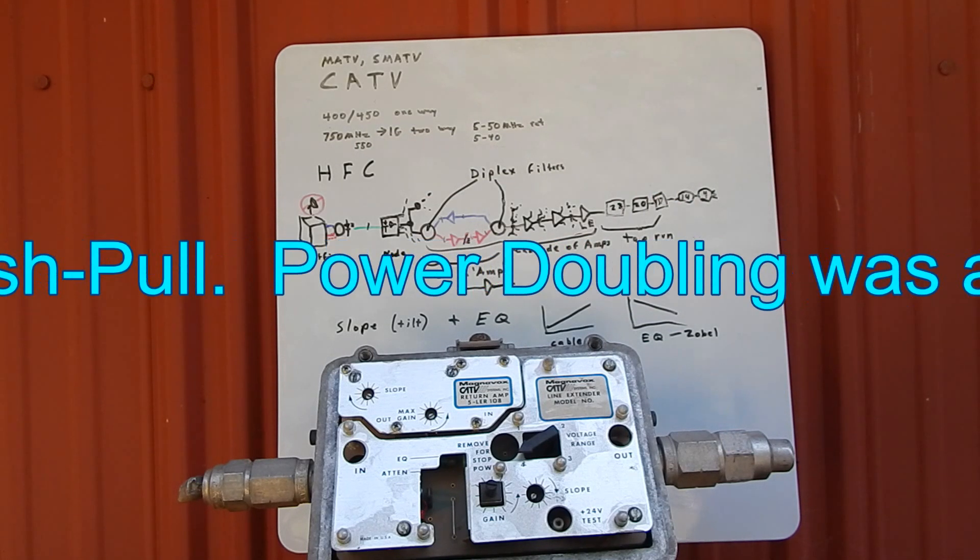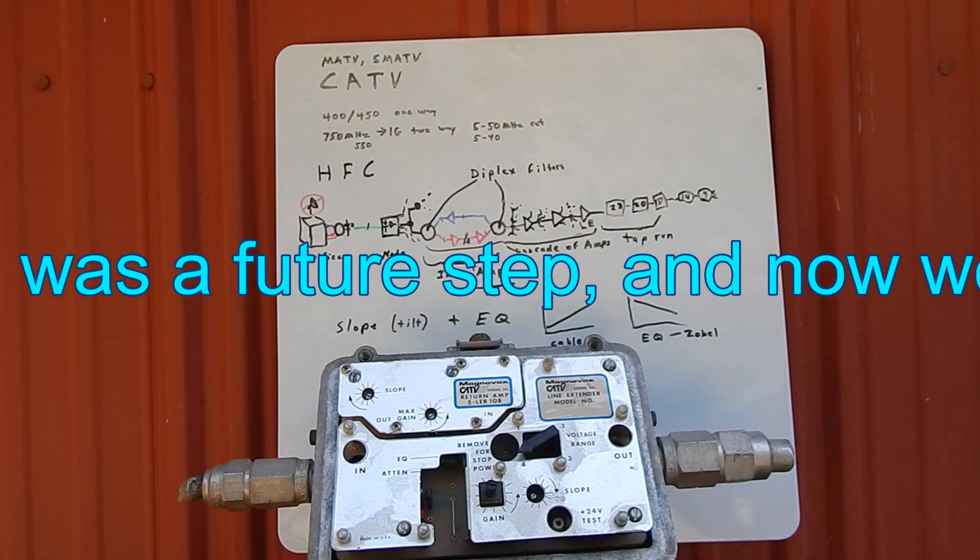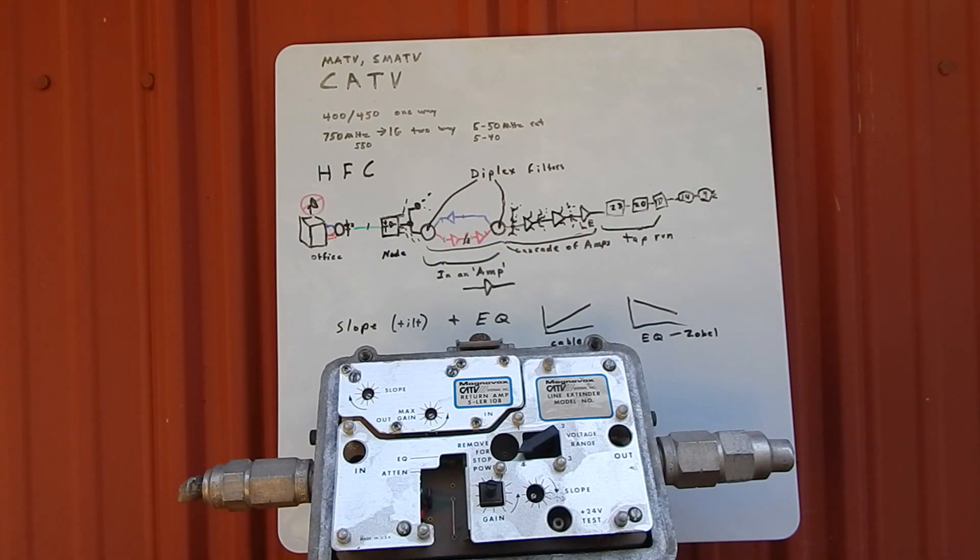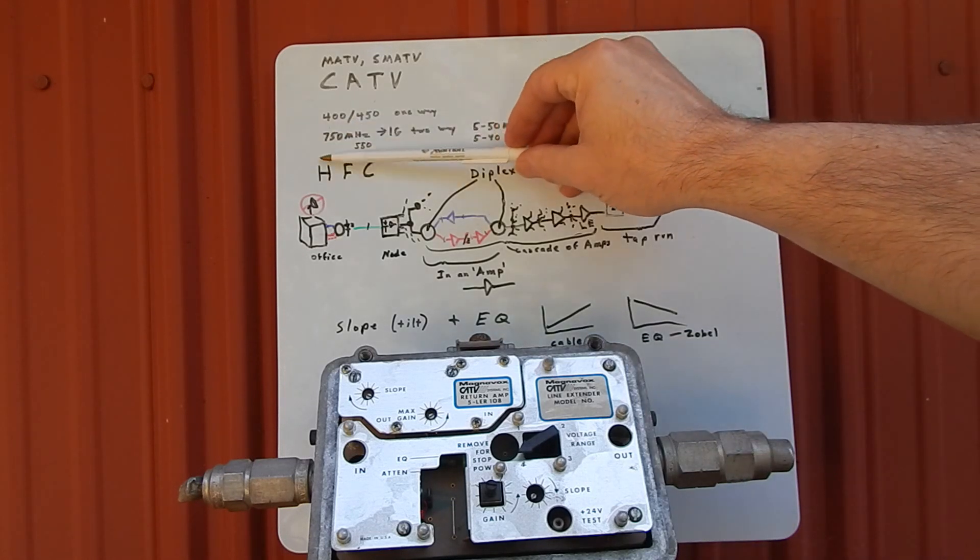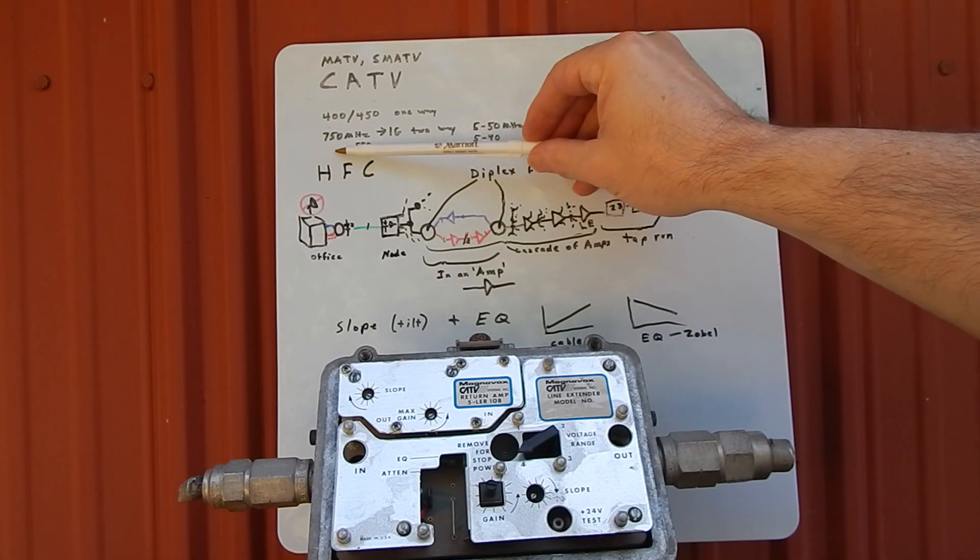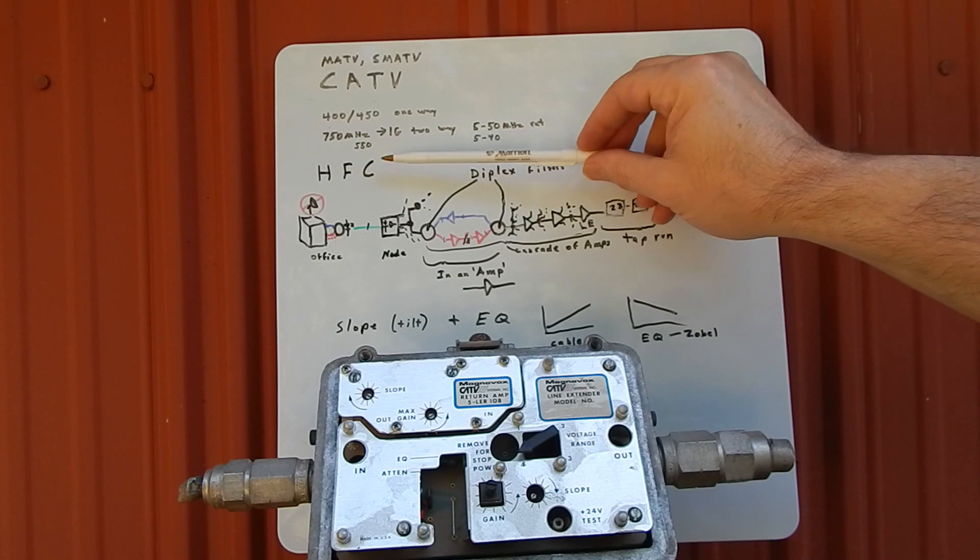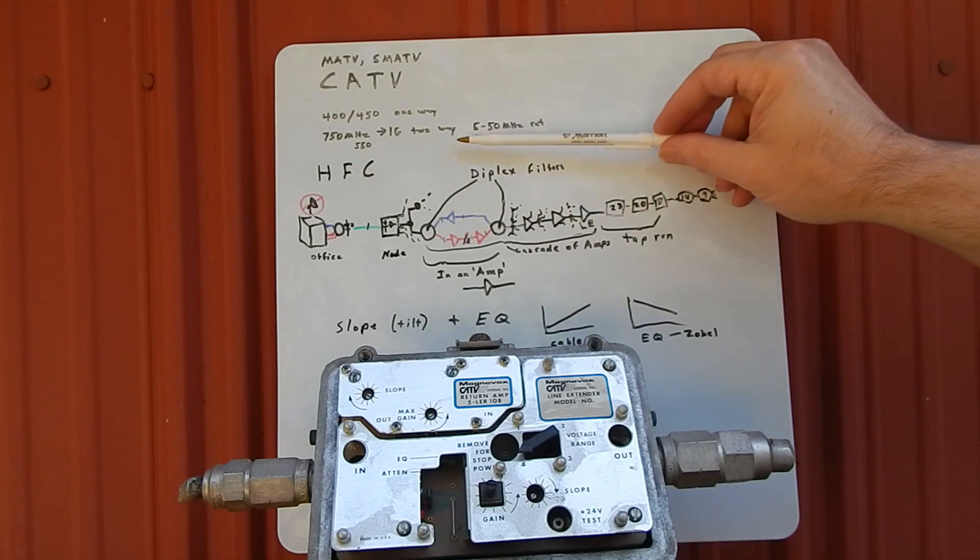Actually, the gold ones were power doubling at 450 megahertz. Nowadays they use something called feed forward technology, which is way beyond that. I'm not going to get into that—could go for an hour right there. Anyway, our system got rebuilt. Eventually I was in a 750 megahertz system.